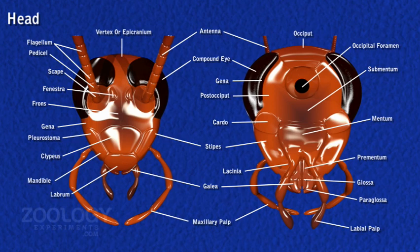Neck: the head is attached to the thorax by a short and narrow neck, which is supported by four small cutaneous plates — two are situated dorsally and two are situated ventrally. The head can be moved by neck muscles in different directions. The whole head is covered by a number of cutaneous plates constituting its exoskeleton, and the fused margins are visible as sutures.